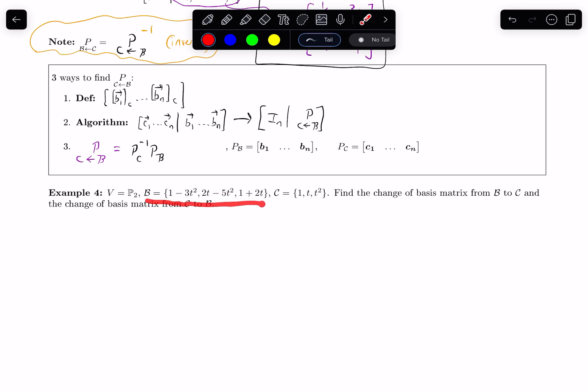V is this basis that consists of these three polynomials within P2, and C is the standard basis for P2 that has 1, t, and t squared in it. So for this problem, we're going to just accept it as fact that this set B is in fact a basis. The problem says let's find the change of basis matrix from B to C and the change of basis matrix from C to B, so in the other direction.